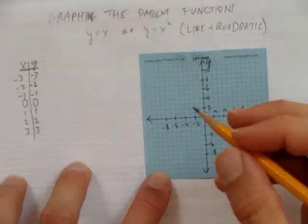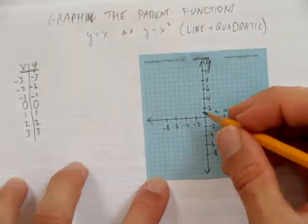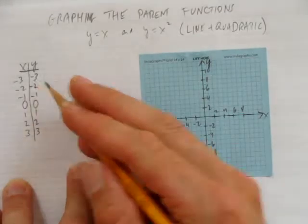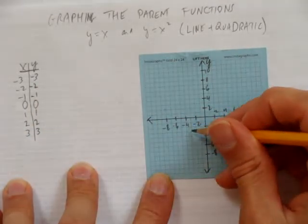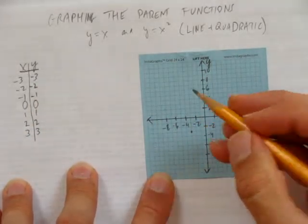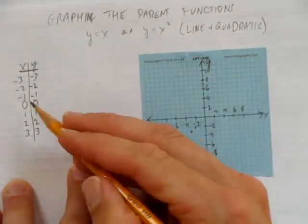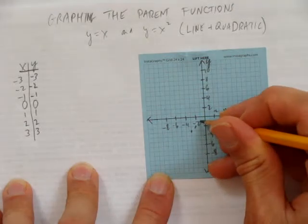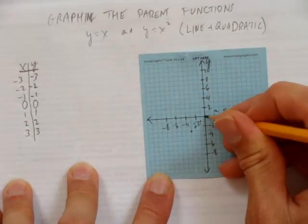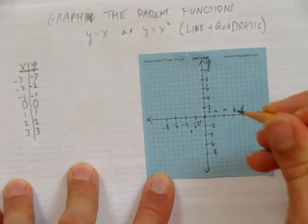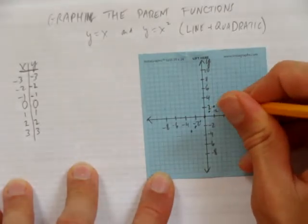When we go to make this, we're going to graph. We can start with the negatives. So, negative 3, negative 3, put a dot. Negative 2, negative 2, put a dot. Negative 1, negative 1, put a dot. A dot at 0, 0. A dot at 1, 1. A dot at 2, 2. A dot at 3, 3.